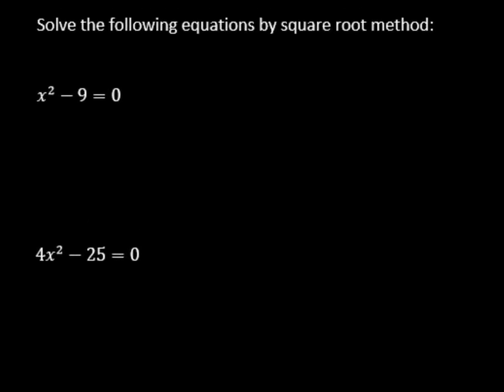So we're going to use what's called the square root method. So to solve using the square root method, we're going to try to get the x squared by itself. So how do we do that here? We're going to add 9 and add 9. Just like what we would do in a linear equation, so then we're going to get x squared equals 9.